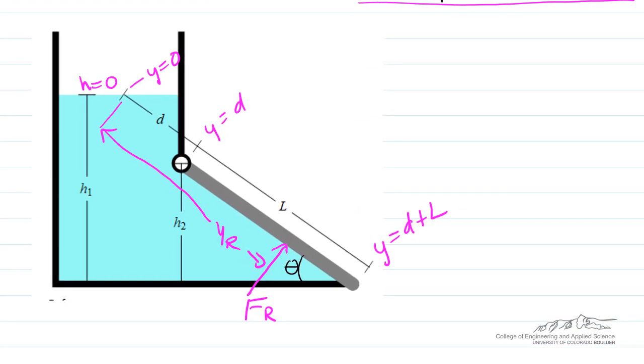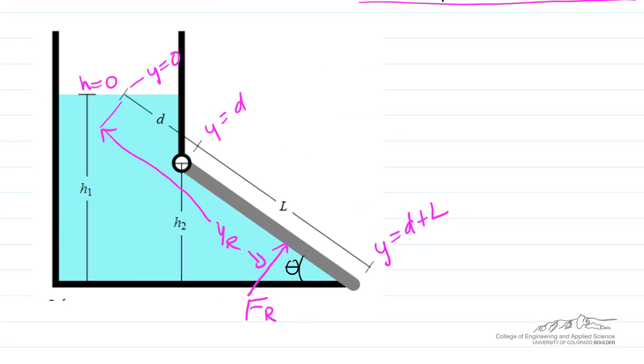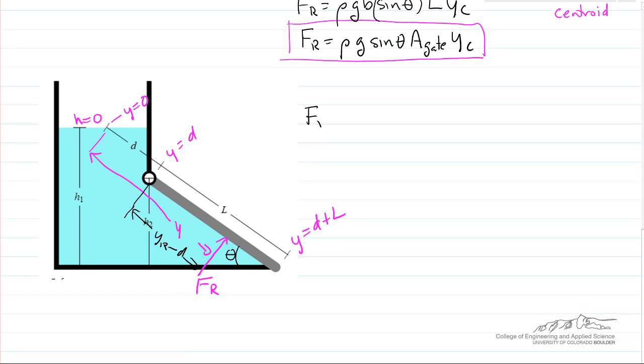So the second part of our calculation is we want to calculate the location of this force, and the way we're going to do that distance is y_r minus d. So the force to the water times the moment arm gives us the torque that's trying to open the gate.